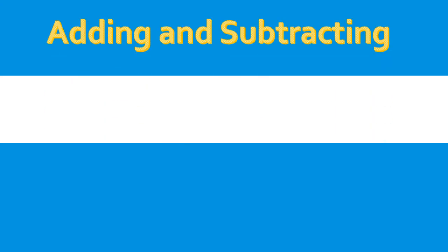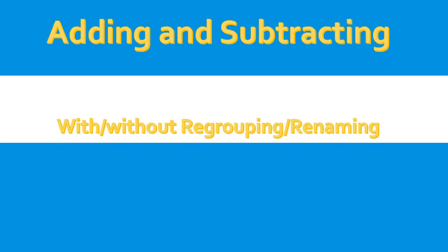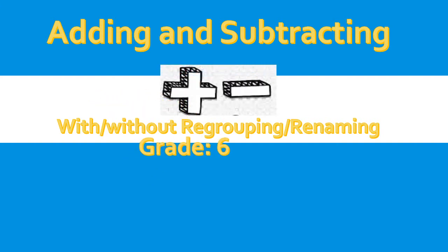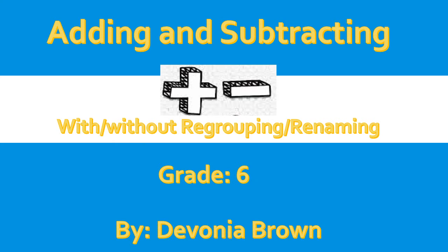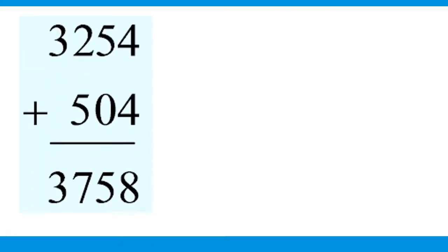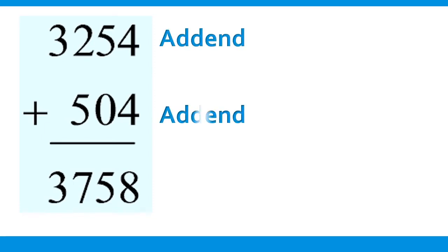Adding and subtracting, with and without regrouping, and renaming. The numbers added together are your addends, and your answer is your sum. Can you identify your addends? Yes, 3,254 and 504 are your addends, and your sum, the answer, is 3,758.